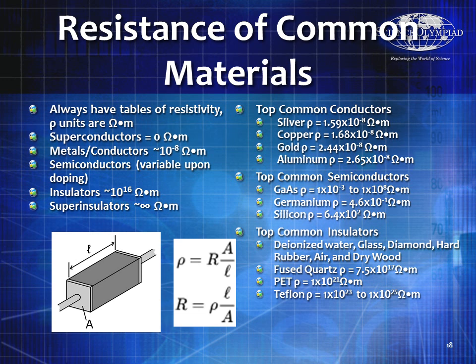Always keep your tables of resistivity handy. Superconductors have a resistivity of about zero ohm-meters. Metals and conductors are around 10 to the minus eighth ohm-meters. Semiconductors are variable and can be doped. Insulators are around 10 to the sixteenth ohm-meters, and super insulators have infinite resistance. Top common conductors are silver, copper, gold, and aluminum. Semiconductors to know include gallium arsenide, germanium, and silicon. Best insulators include glass, diamond, hard rubber, air, dry wood, fused quartz, and specialty materials like PET and Teflon.